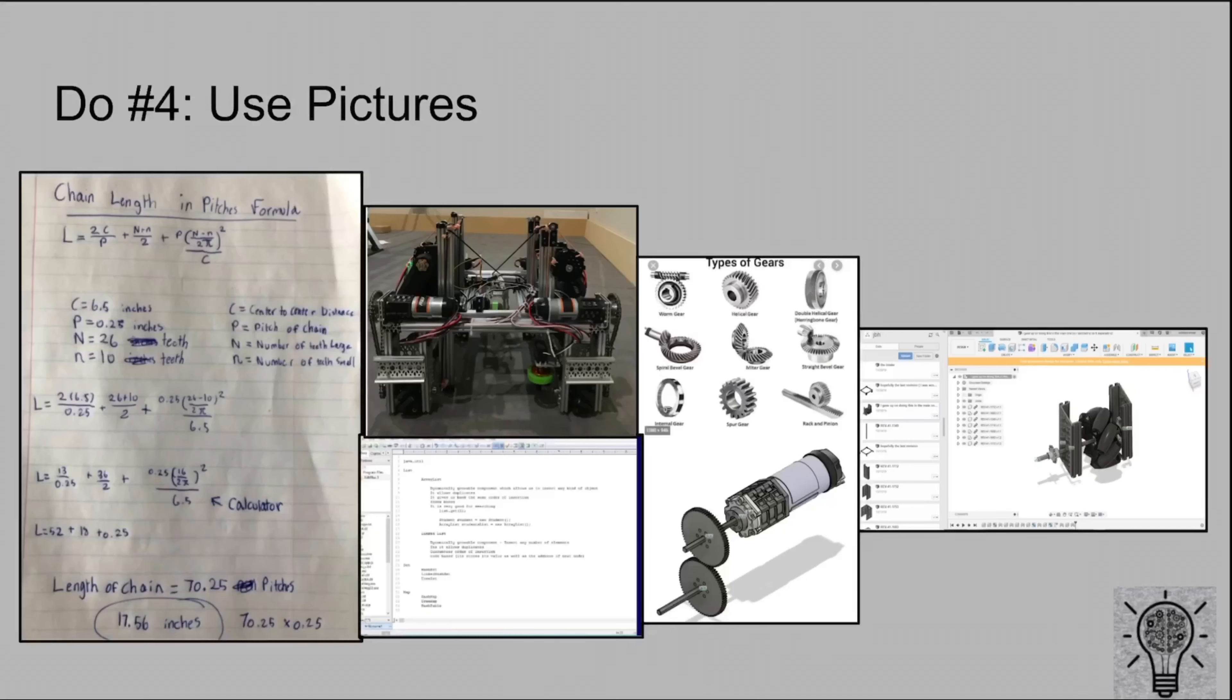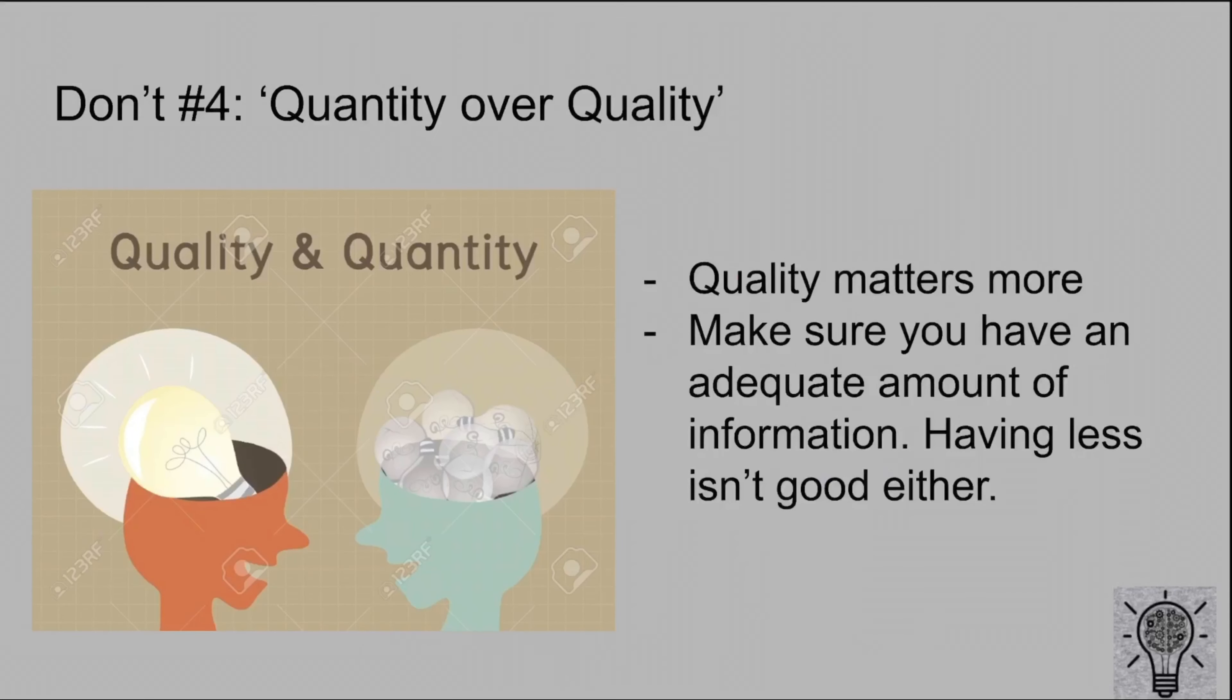Do number one: have a table of contents at the beginning of your engineering notebook. That way it's more organized and the judges can go through it with ease. Not only that, but you can easily find what you need for future references. Have a team summary on the inside cover as well as pages you'd like the judges to consider.